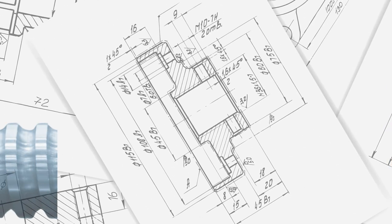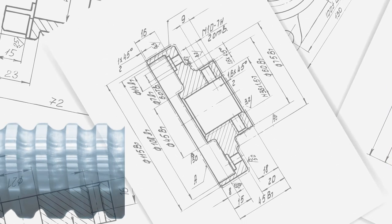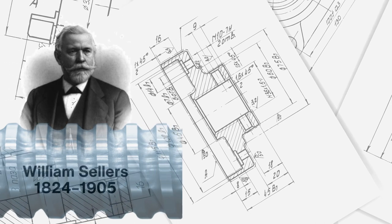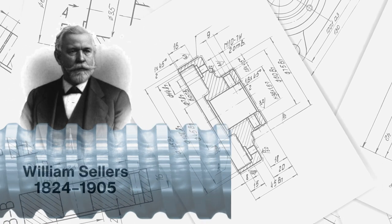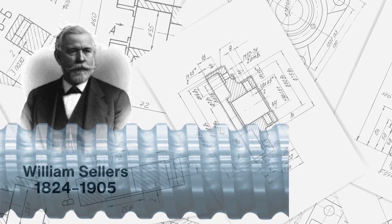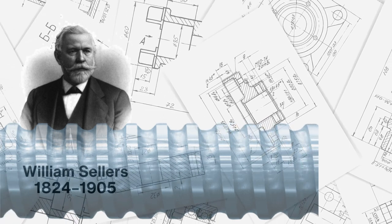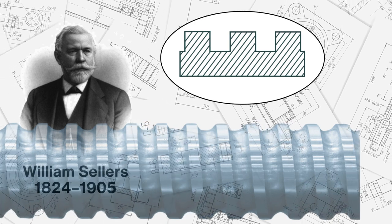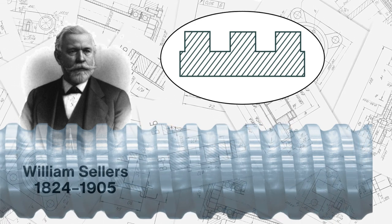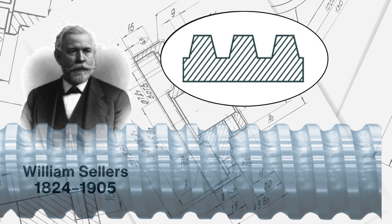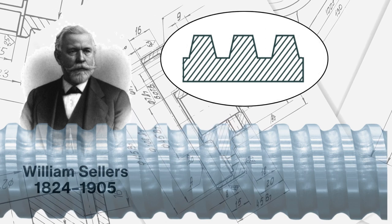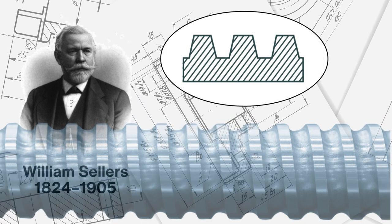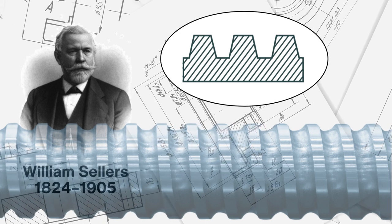ACME threads were first developed in the late 1800s by the American industrialist inventor, William Sellers. Sellers aimed to create a lead screw thread that was stronger and easier to manufacture than the square thread design commonly used at the time. The resulting trapeze-shaped thread form became known as the ACME thread, and quickly gained popularity in the design of lead screws and power screws.